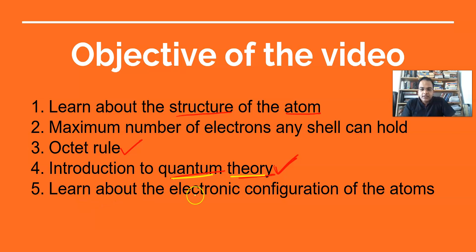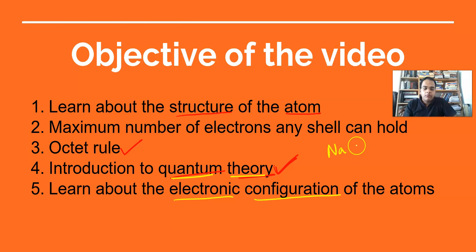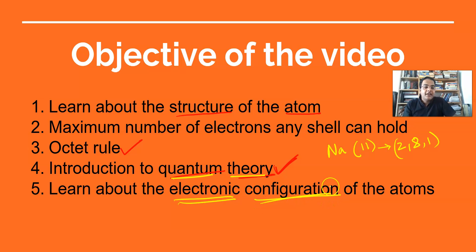The objective of this session — as the name in the book says — is to learn about the electronic configuration of the atom. We will be able to understand electronic configuration not in the way you have already done it. For example, I know that sodium has an atomic number of 11 with an electronic configuration of 2,8,1. But that is not the kind of electronic configuration I am talking about here — it is slightly different, a quantum theory type. So let's quickly finish off with these three points first and then move on to that next part.